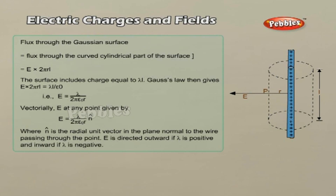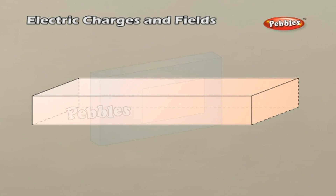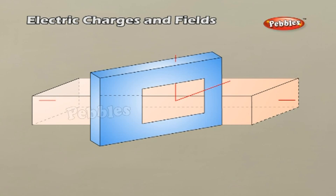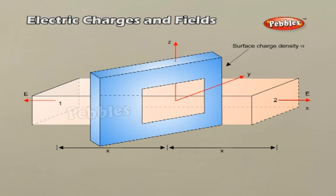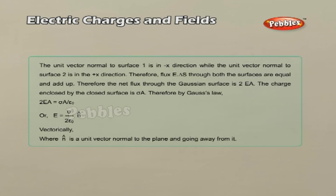At the curved cylindrical part of the surface, E is normal to the surface at every point and its magnitude is constant, depending only on R. The surface area of the curved part is 2 pi RL, where L is the length of the cylinder. Field due to a uniformly charged infinite plane sheet: let sigma be the uniform surface charge density. Taking the x-axis normal to the plane, by symmetry the electric field does not depend on y and z coordinates and must be parallel to the x-direction. The Gaussian surface is taken as a rectangular parallelepiped of cross-section area A. Only the two faces parallel to the sheet contribute to the flux; the field lines are parallel to the other faces and do not contribute to the total flux.